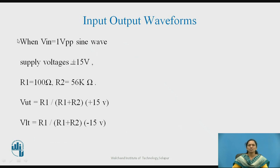Assume the input signal is 1 volt peak-to-peak, so we can have the signal varying from 0 to 0.5 V in the positive direction and 0 to 0.5 V in the negative direction, and supply voltages are ±15 V.